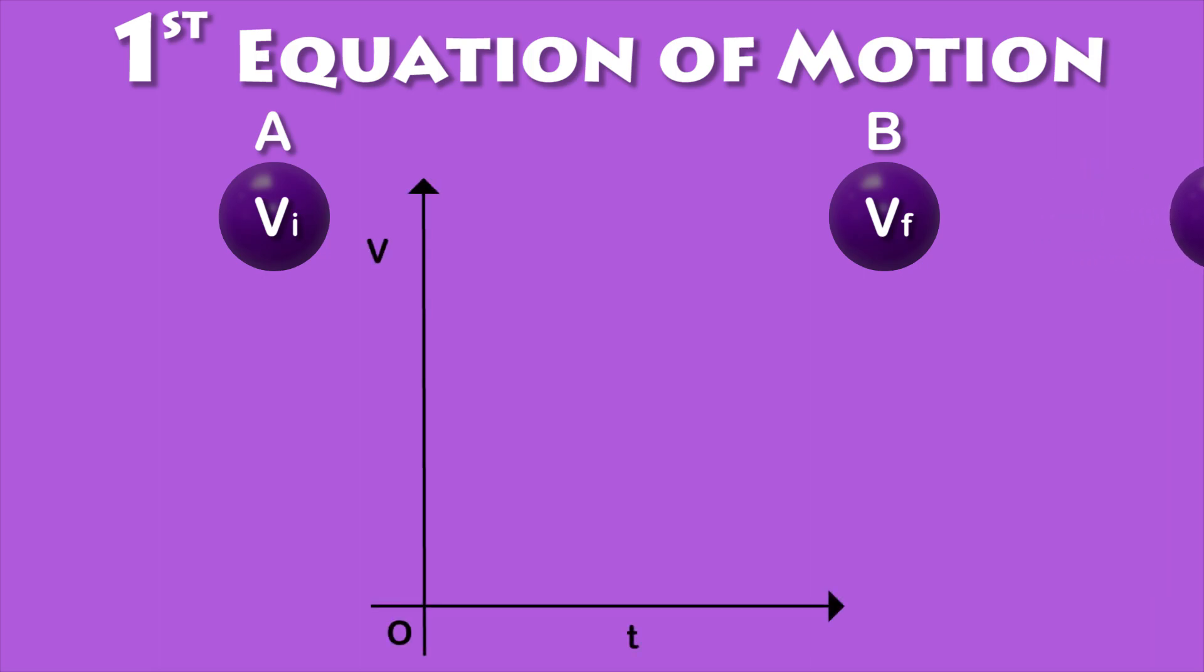Let's make a velocity-time graph of this situation. At point A, the velocity of the body is Vi, which is OA on the graph. After some time t, which is OD, at point B its velocity becomes Vf, which is BD on the graph.